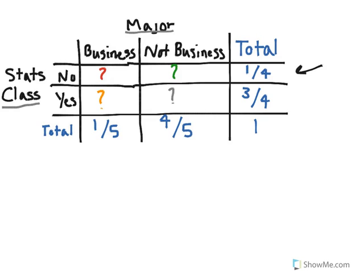Based on this, there's a 25% chance they haven't taken a stats class before and a 75% chance they have. There's a 20% chance they're a business major and an 80% chance they're not. This number in the bottom right always has to add up to 1 because there's a 100% chance that they're business or not business.